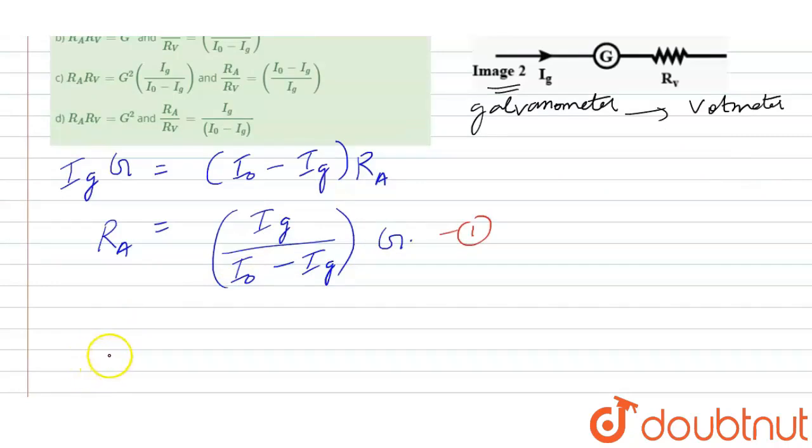Similarly, when galvanometer is used as a voltmeter, we get the relation as, because both are in series combination, it is IG times G plus RV, where RV is the resistance of the voltmeter, is equal to G times I0.